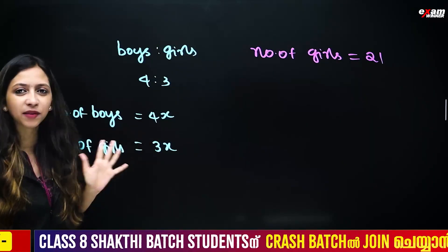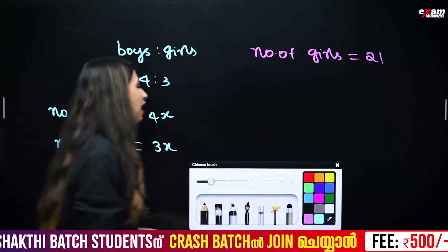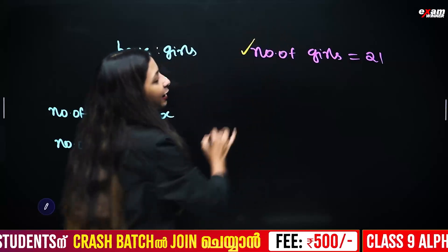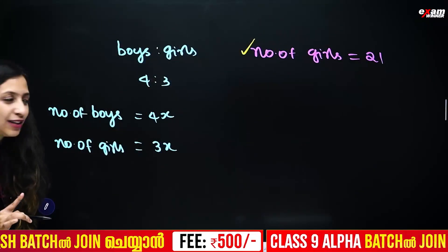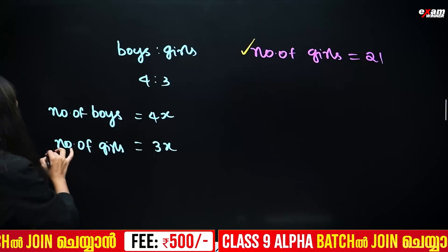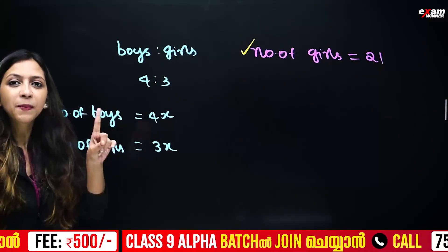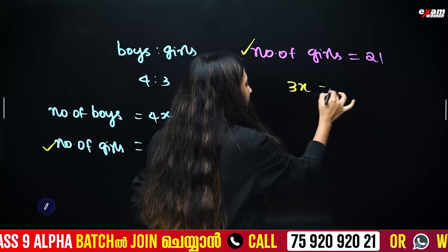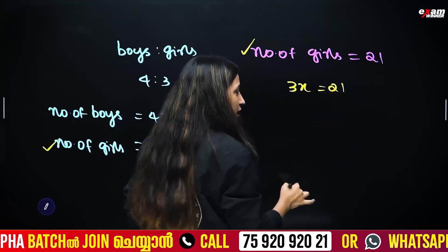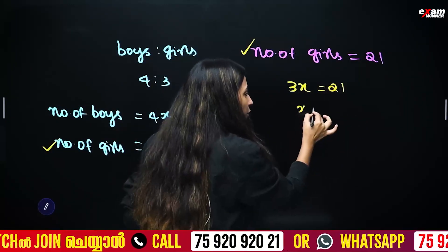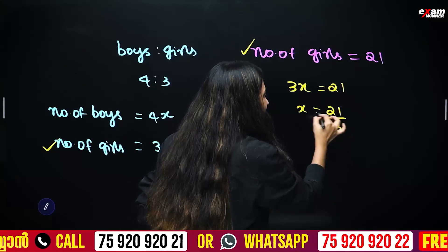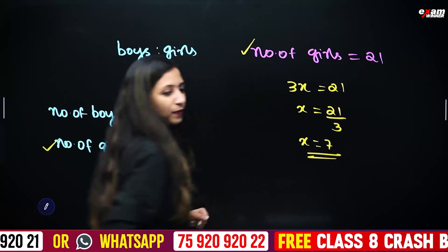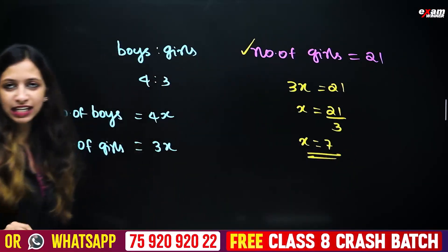We will answer this question. The number of girls is given as 21. We say the number of girls is 3x. So if 3x equals 21, then x equals 21 divided by 3, that is x is equal to 7.